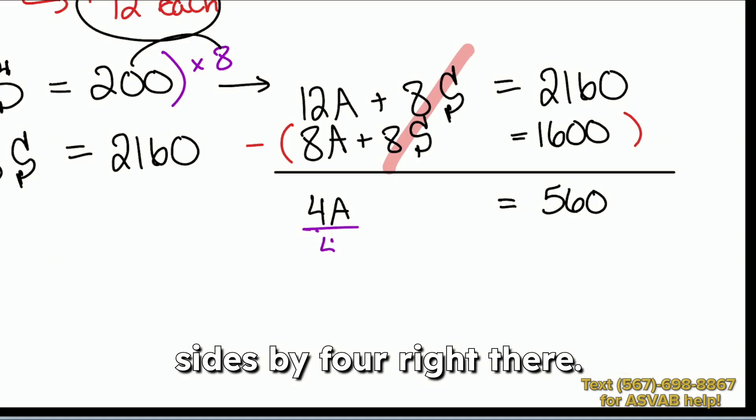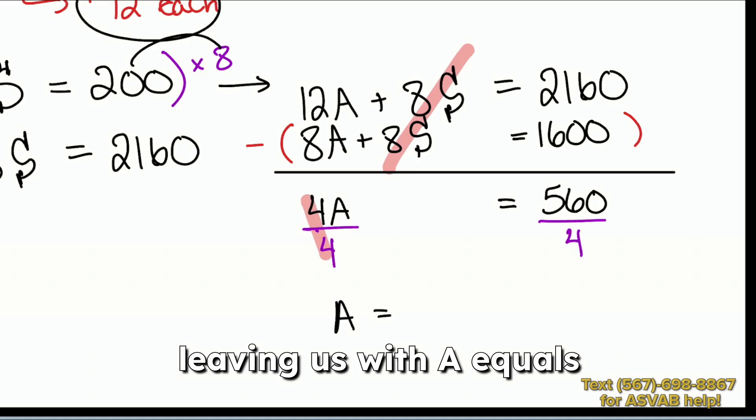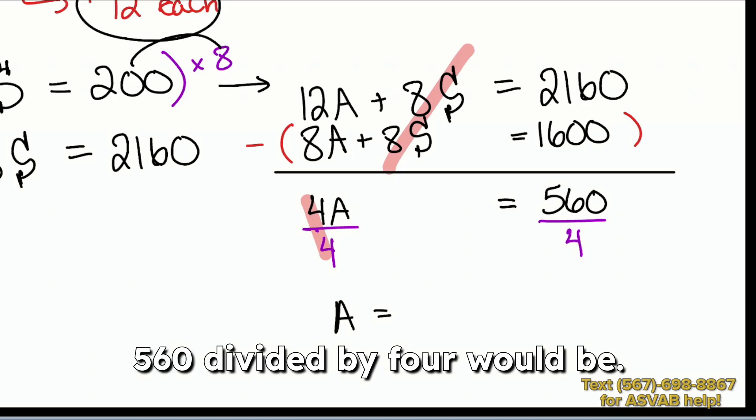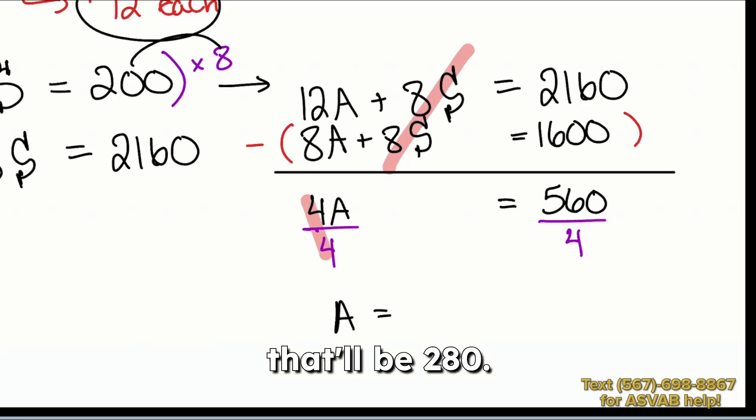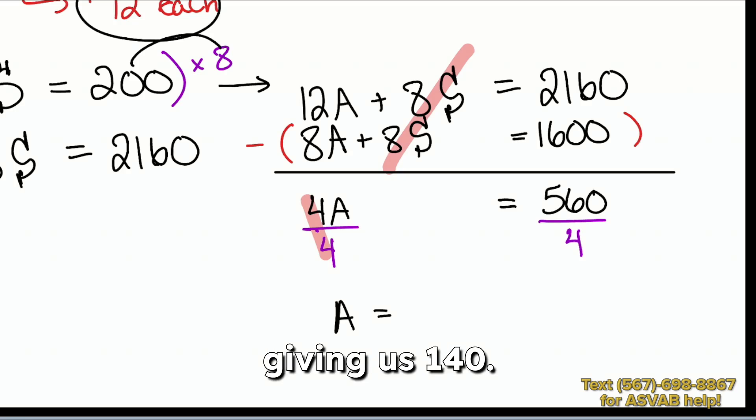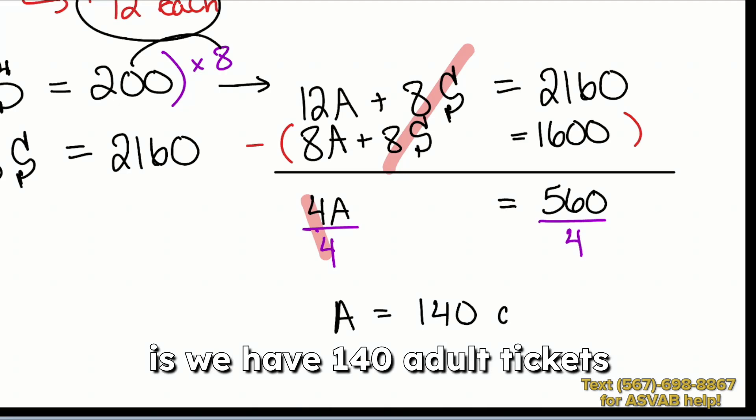So here we go. We'll go ahead and divide both sides by four. And that's going to cancel out the four on the left, leaving us with A equals 560 divided by four. 560 divided by four would be, if we divide by two, that'll be 280. Then divide by two again, giving us 140. You can do long division if you'd like to, but essentially the conclusion is we have 140 adult tickets sold.